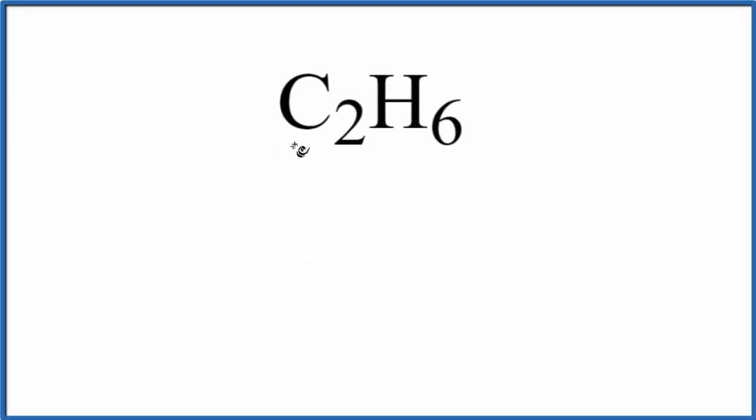In this video, we'll find the number of atoms in C2H6. This is called ethane. Let's write the element symbol down. We have C for carbon, H for hydrogen.